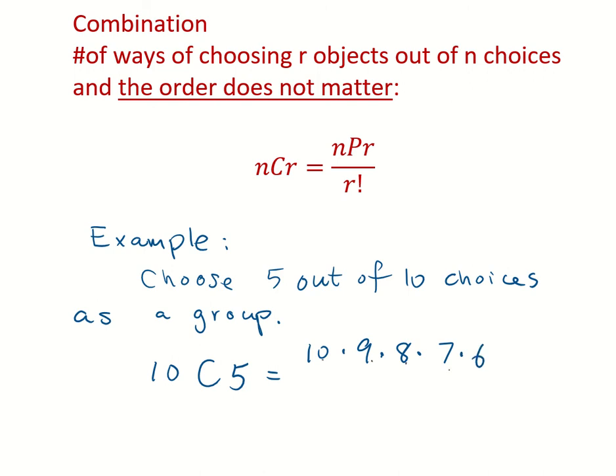How many do I have here? 1, 2, 3, 4, 5. Awesome. Divided by 5 factorial, which is 5 times 4 times 3 times 2 times 1. So this will be the number of ways to making such a choice.